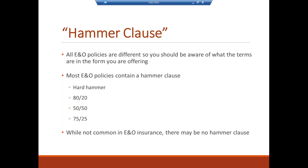All E&O policies are different, so be aware of what type of consent-to-settle clause is in place. Most policies contain a hammer clause. The hard hammer means the insured either accepts the settlement or is on their own. An 80/20 split means the insurance company pays 80% and the insured is responsible for 20% if they choose to proceed beyond the recommended settlement. There are also 50/50 and 75/25 variations. Some carriers, though not common, include no hammer clause at all.